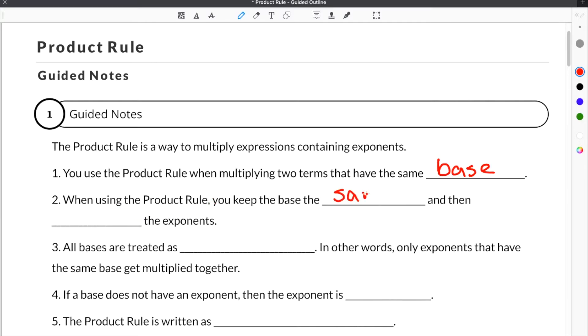When using the product rule, you keep the base the same and then add the exponents. In the case of 3 squared or x squared, the bases are the numbers that are attached to the exponents. In this case, the base is 3 and then the x would be the other base in the second term.